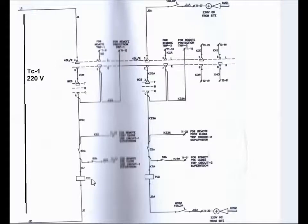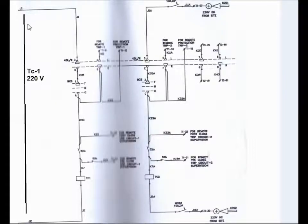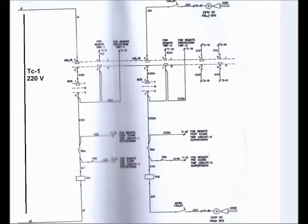For the tripping operation of the circuit breaker, there are two trip coils: TC1 and TC2. For TC1, the DC positive supply is common with the closing coil — at terminals J1 and J2. For TC2, another DC supply comes from the control and relay panel, with DC positive connected to terminal 37 and DC negative to terminal 38.